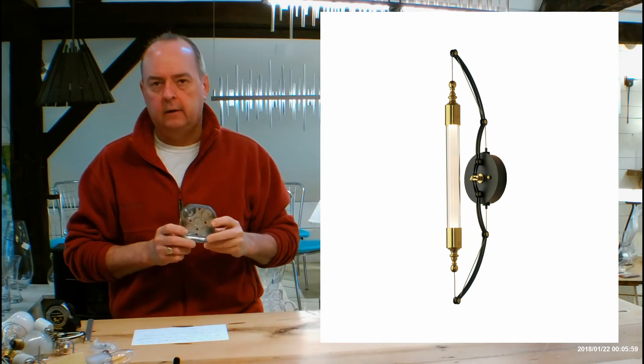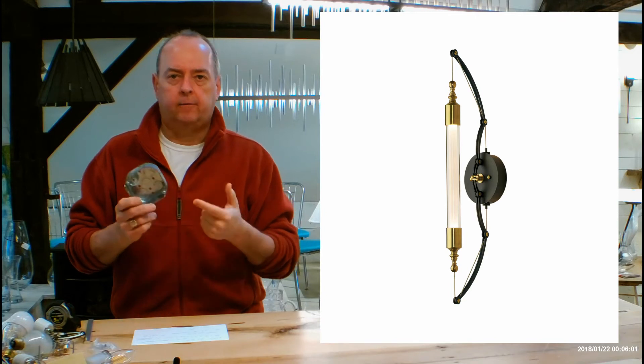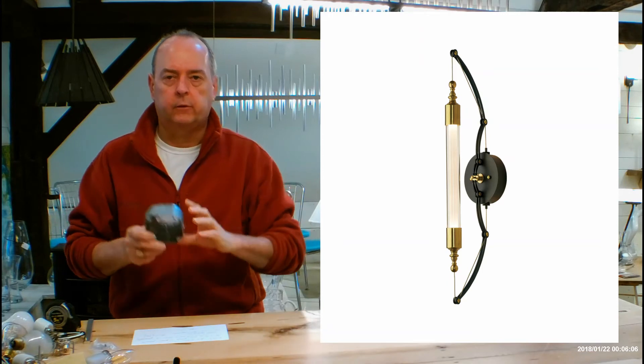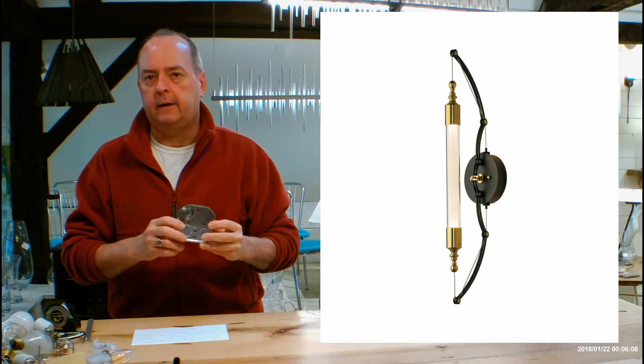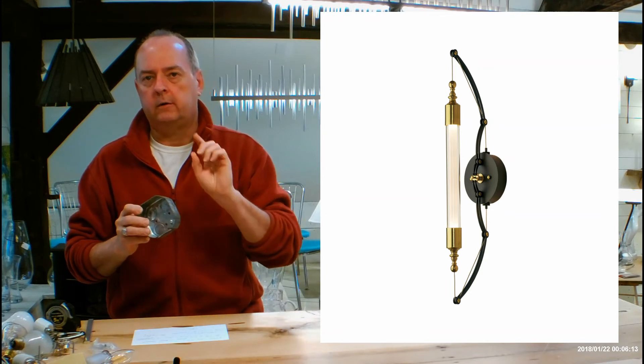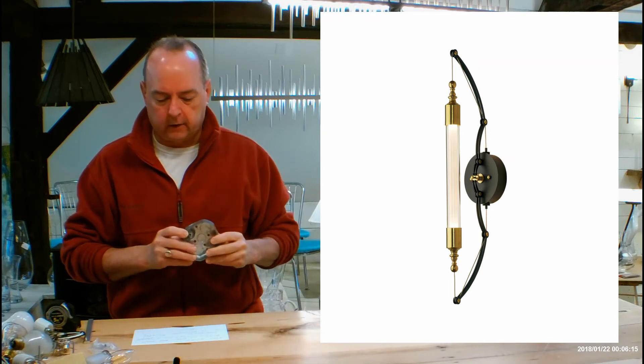The diameter of the back plate, the part that goes over your junction box, is 5.1 inches. The mounting height from the bottom of the fixture to the middle of your electrical outlet box is 13.2 inches. You'll notice that back plate is about that thick because it's holding a transformer. This is a low voltage halogen fixture.